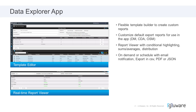The second main piece is the real-time report viewer. As you generate your template, you're able to select devices and run the report, then look at that data and decide if it's manipulated and designed the way you want it in the real-time viewer. You can then integrate it into the product further by either generating it on demand and using those results, or scheduling those results and having them emailed out to you periodically in CSV, PDF, or JSON format.